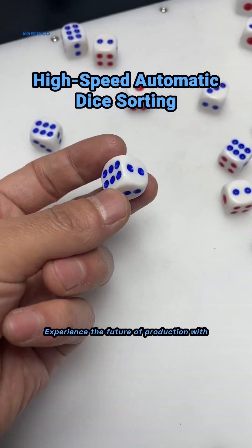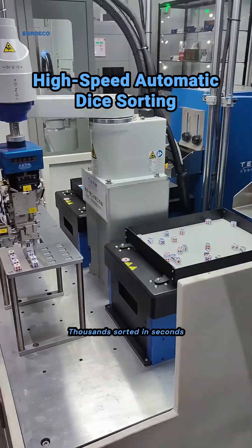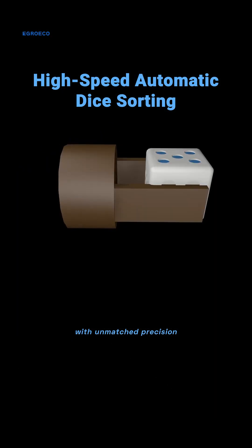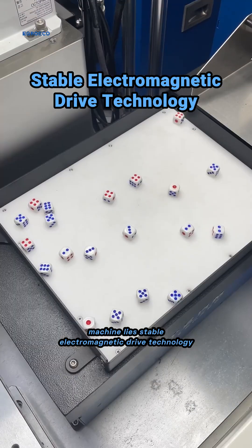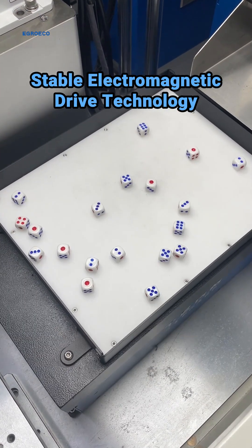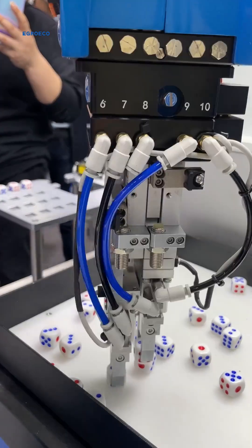Experience the future of production with our high-speed automatic dice sorting technology. Thousands sorted in seconds, with unmatched precision. At the heart of our sorting machine lies stable electromagnetic drive technology, guaranteeing consistent performance and precision for every piece.